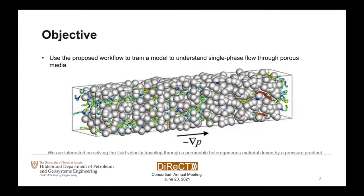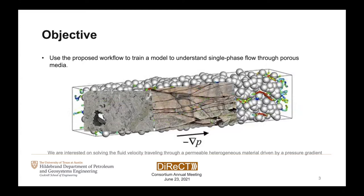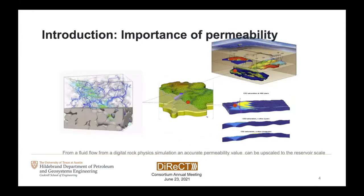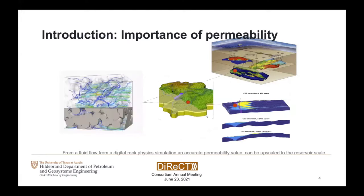Our main objective is to train a model to understand how fluids behave when traveling through a complicated and disordered medium while being driven by a pressure gradient. This goal is specifically tricky in the presence of heterogeneities — for example, if we have vugs in our system, fractured media, or very tight, finely dispersed materials.